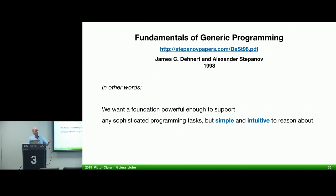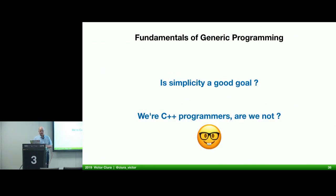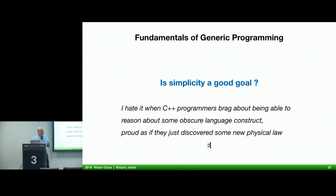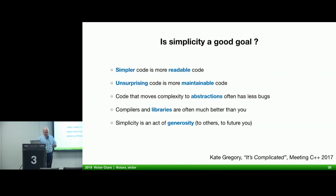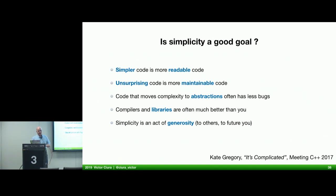In other words, we want a foundation powerful enough to support any sophisticated programming task but simple and intuitive to reason about. But is simplicity a good goal? We are C++ developers — we thrive on complexity. I just dislike when C++ developers brag about comprehending complicated concepts and showing off to others. Simple code is more readable, unsurprising code is more maintainable, code that moves complexity to abstractions often has fewer bugs, and compilers and libraries are often much better than us at doing stuff. Simplicity is an act of generosity — not just for you, but for others that work with you.